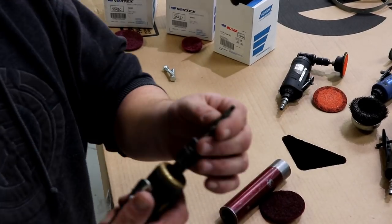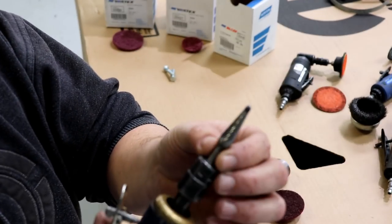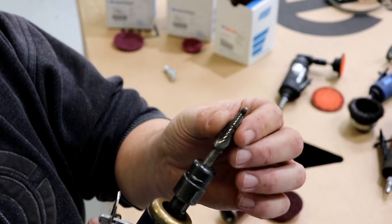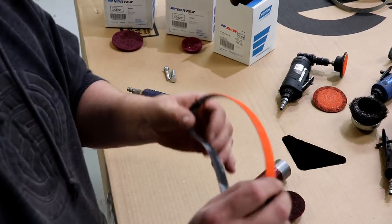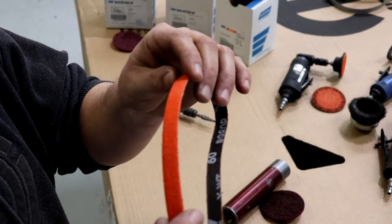Okay, so what we're going to do today is we're going to take a deburring bit right here. This is a nice sharp new one, really good shape. We're going to pick this up, this 60 grit Norton Blaze.